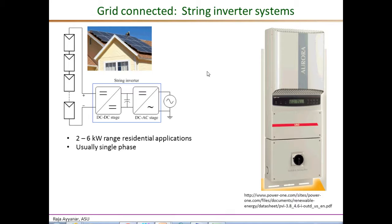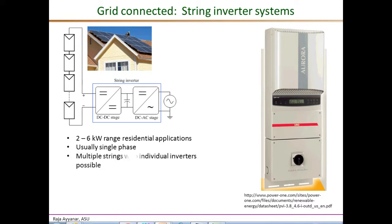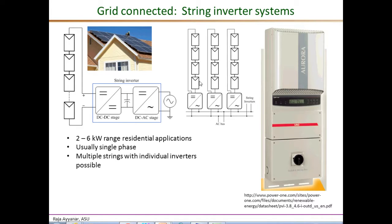The next type is the string inverter system, usually used in residential applications with power ratings ranging from 2 kilowatts to about 6 kilowatts, and they tend to be single-phase systems. In this configuration, series-connected PV panels produce a DC voltage roughly in the range of 300 to 500 volts DC, which is converted to grid-quality AC through the string inverter. It is also possible at higher power levels to have multiple PV strings, each connected to an individual inverter, producing about 400 to 500 volts DC converted to AC independently.